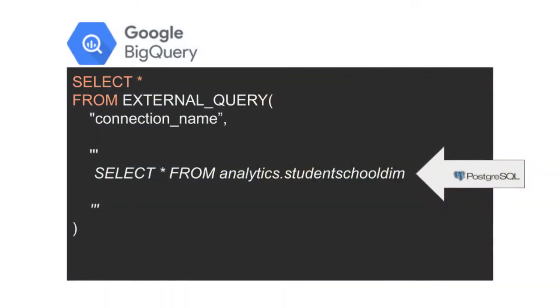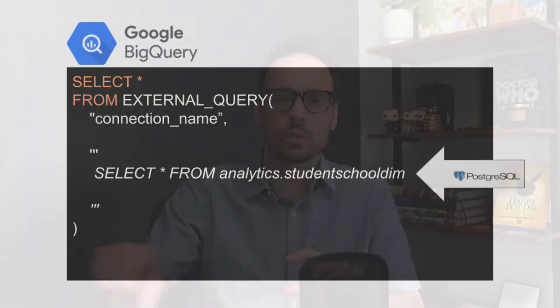So how do we actually move data from our EdFi ODS into Google BigQuery? There are a lot of ways, and we'll be covering a few different methods. The one we're talking about today is running federated queries on your Cloud SQL instance from within BigQuery using a special function called external query. You call external query, pass in a connection name and a SQL statement, and BigQuery runs that PostgreSQL statement on your EdFi ODS and shows the results back in BigQuery.